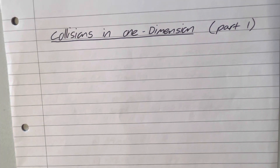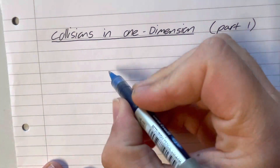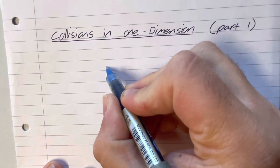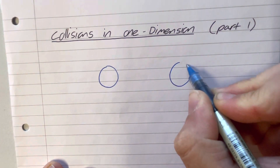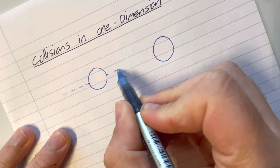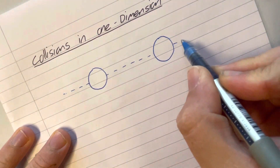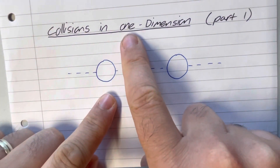Welcome to part one of Collisions in One Dimension. Part two will come in a couple of videos time once we've done another little bit of theory in the next video. Collisions in One Dimension is something on the Mechanics Minor course. All collision questions will occur on a single line - this is why it's called Collisions in One Dimension.